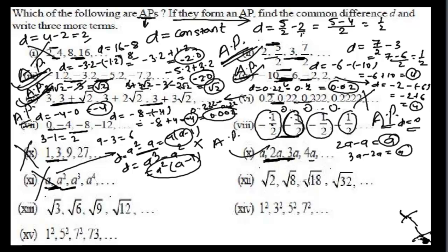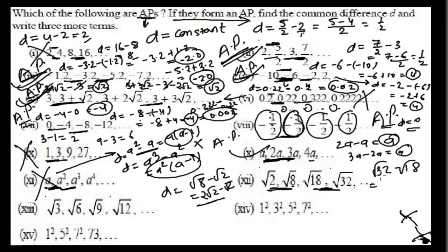The sequence is √2, √8, √18, √32. The common difference is √8 minus √2 equals 2√2 minus √2 equals √2. Checking: √32 minus √18 equals 4√2 minus 3√2 equals √2 again. Since the common difference is √2 throughout, this is an arithmetic progression.